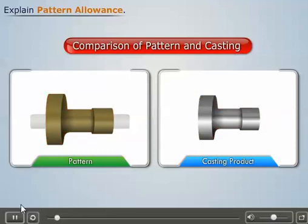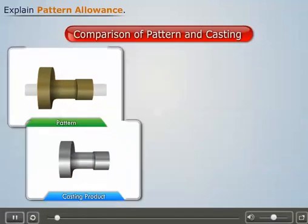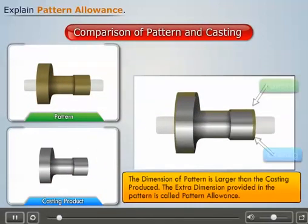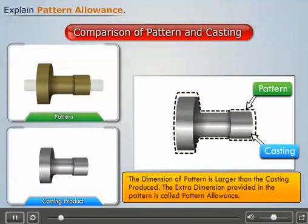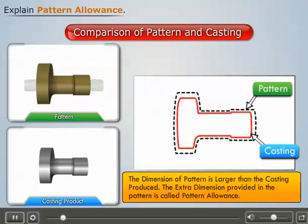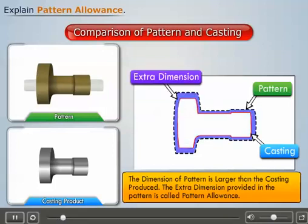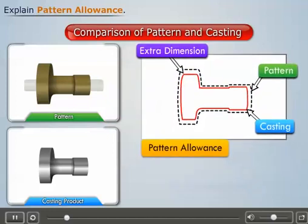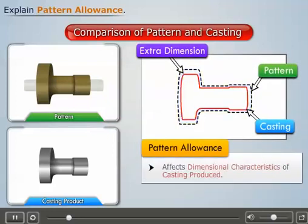Generally, the dimension of a pattern is larger than the casting produced. The extra dimension provided in the pattern is called pattern allowance. It is an important feature as it affects the dimensional characteristics of the casting produced.